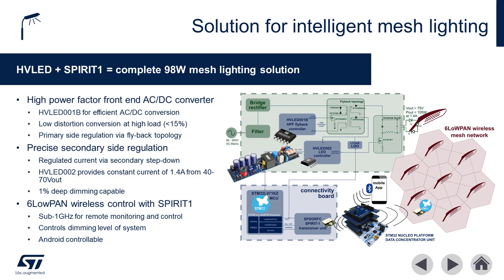The second block of this system features the HVLED002 secondary controller. The secondary output current is regulated by the HVLED002 in an inverse buck configuration. The output voltage is configurable from 40 to 70 volts at 1.4 amps, and it can provide precision dimming as low as 1%. The final piece of this mesh lighting solution is a Spirit 1 sub-gigahertz low power radio.